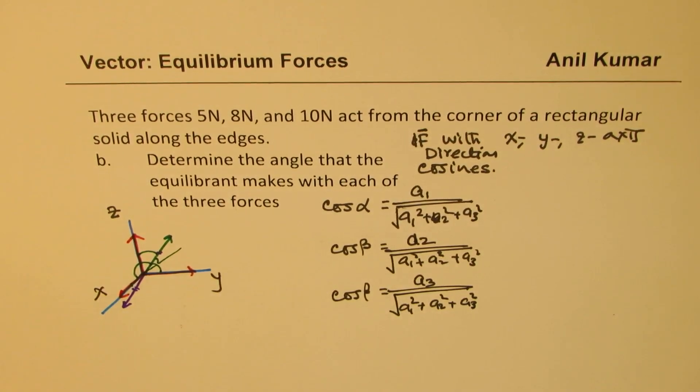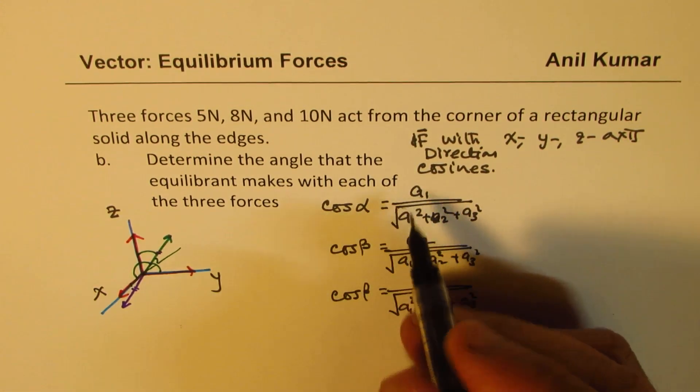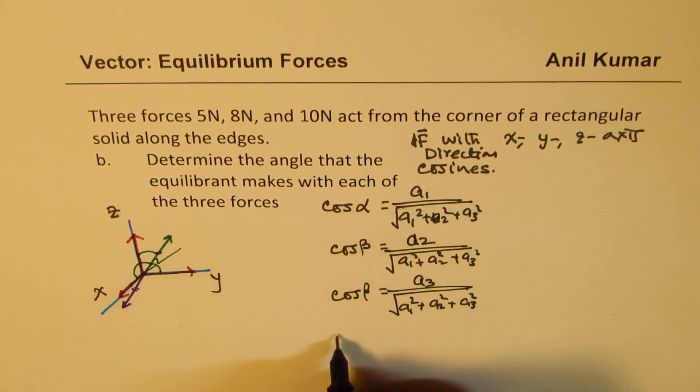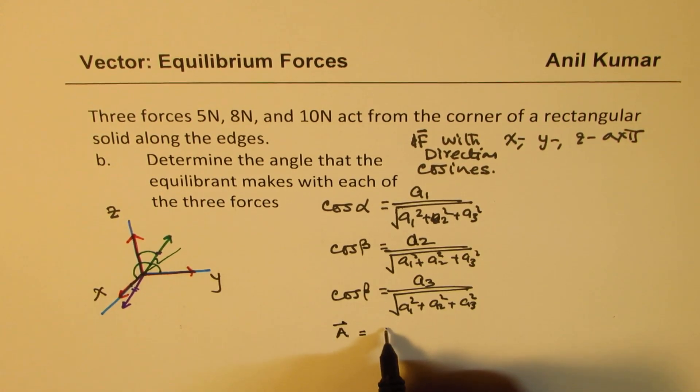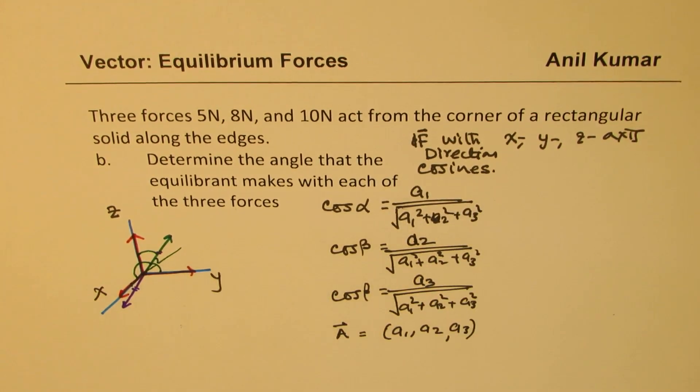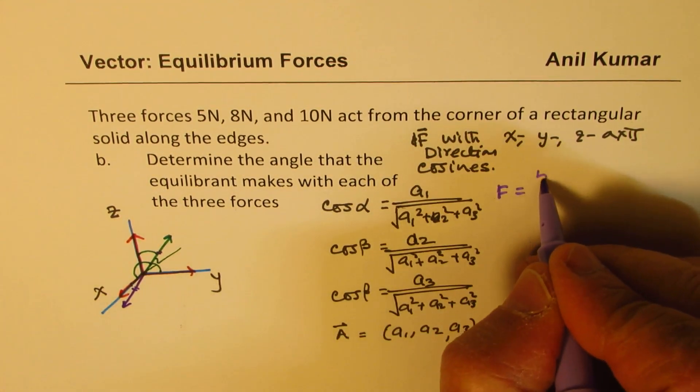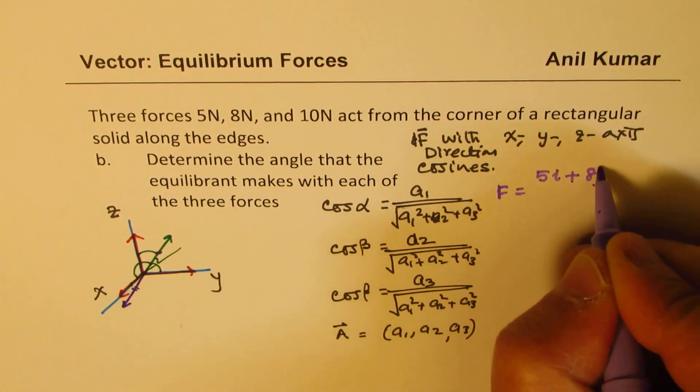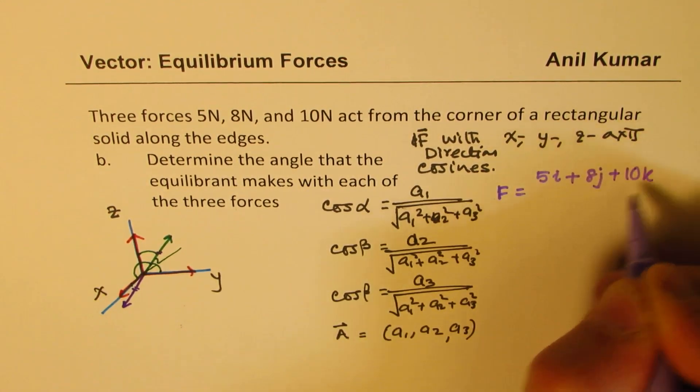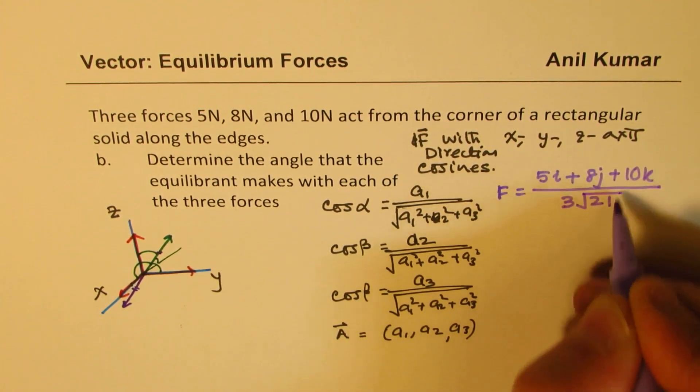Now basically, where the vector a is a1, a2, a3. Clear? In that case this is the formula. So what we have already got here is our force, and the force is 5i plus 8j plus 10k and we also know that its magnitude is 3 square root 21 we just found.